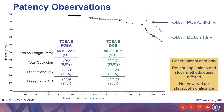There were more total occlusions in the DCB arm — almost a third of patients — versus less than 10% in the POBA arm. Dissections were distributed roughly equivalently between the two groups. The DCB arm performed with 72% patency at 12 months, while the TOBA II POBA arm had a remarkable outcome with nearly 90% patency at 12 months.